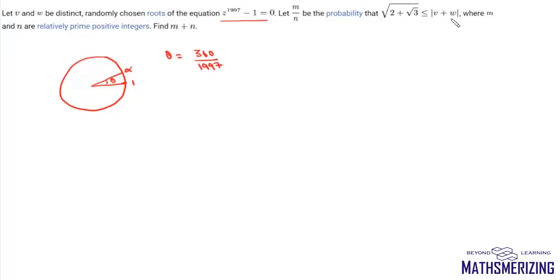Now we need to choose two roots v and w such that mod of v plus w is greater than or equal to root of 2 plus root 3.